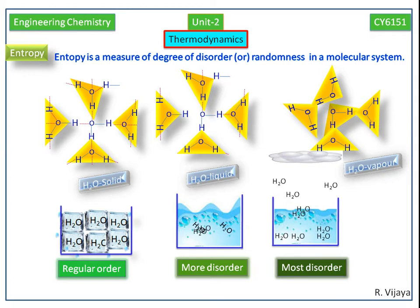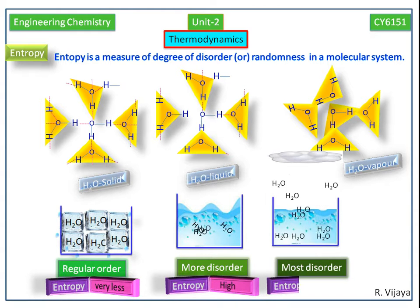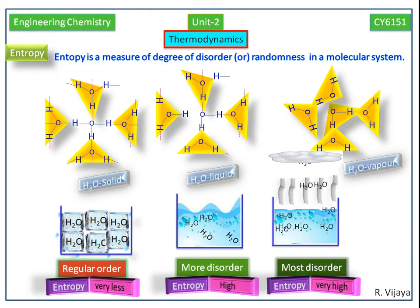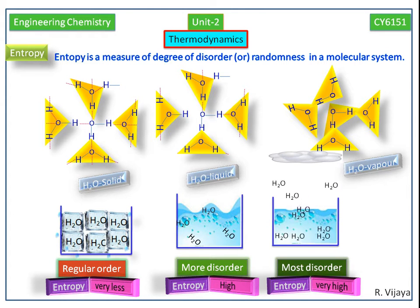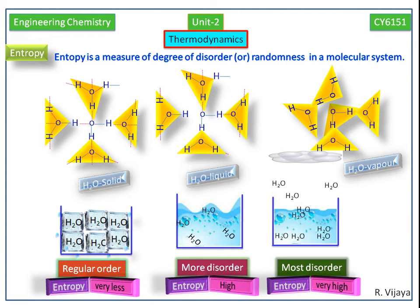Next, we see the entropy in solid, liquid, and vapor phase of water. In solid state, the entropy is very low because it has a regular arrangement of molecules. In liquid state, it is high. In vapor phase, it is very high because the randomness is very high in vapor phase.